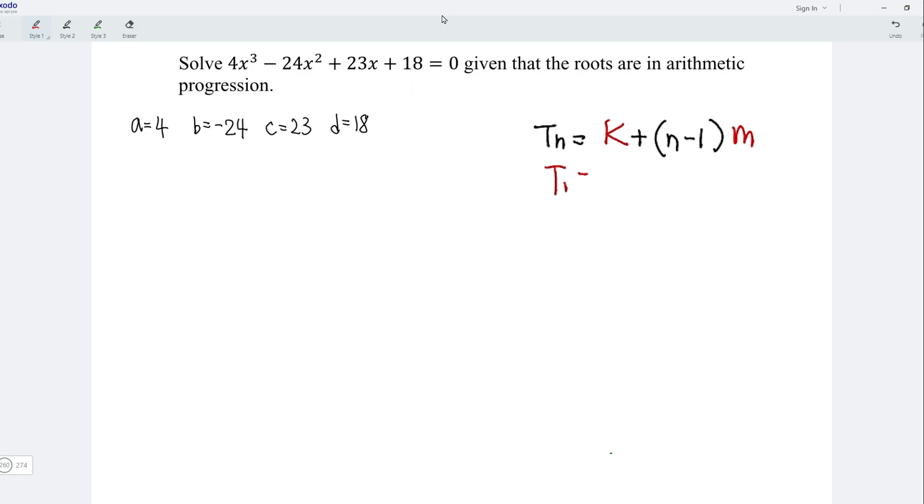Therefore, the first term is equal to K, the second term is equal to K plus M, while the third term is equal to K plus 2M.